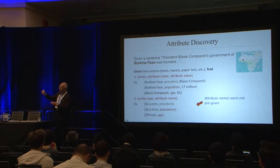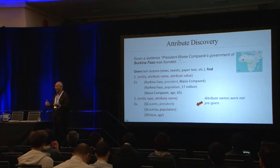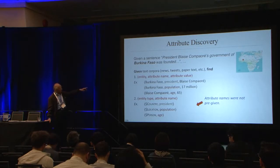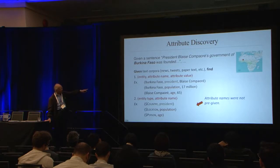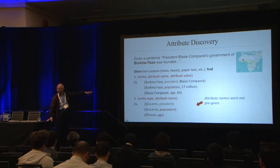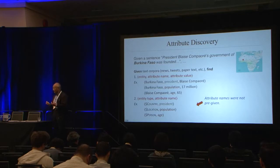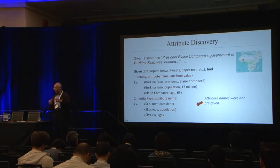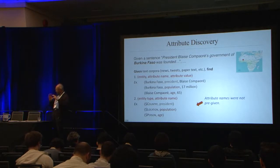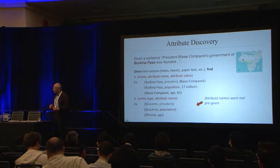From sentences like these, you can generate the entity (which is a country), the attribute name (which is 'president'), and the attribute value (which is the name). Reading further, you may even generate a country's population or a president's age. We call this information extraction — you extract entity, attributes, and values to turn unstructured text into a structured knowledge base.